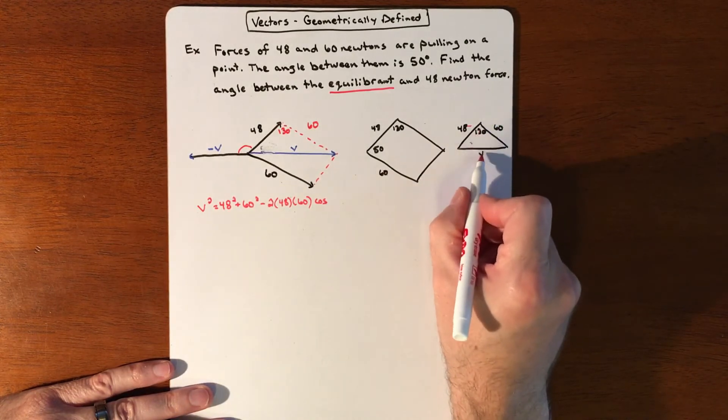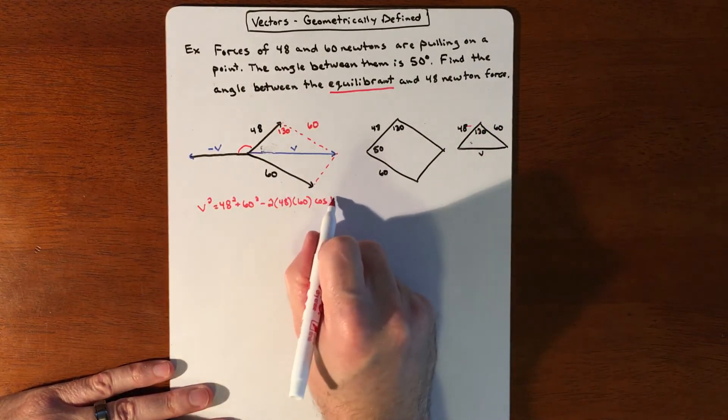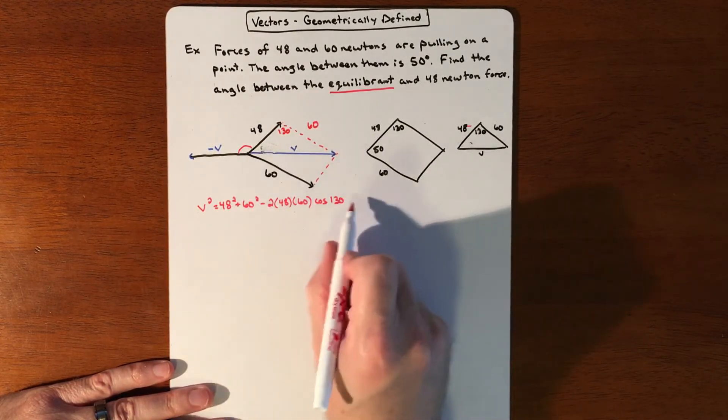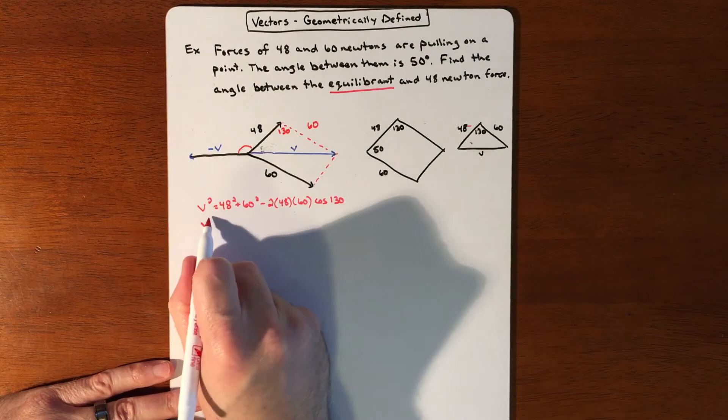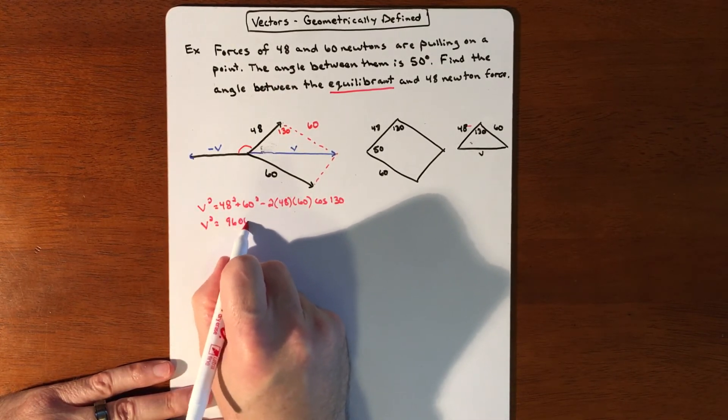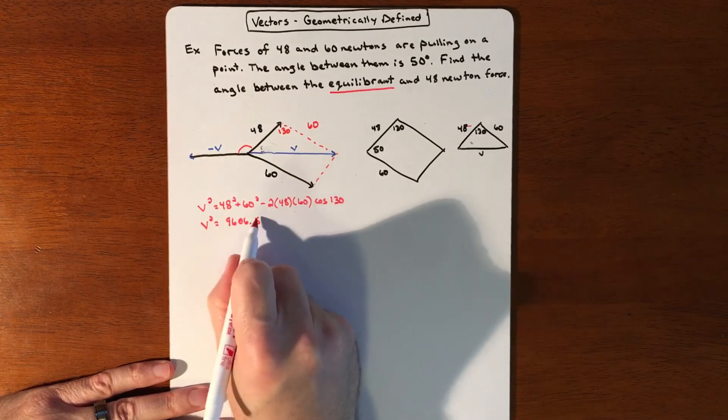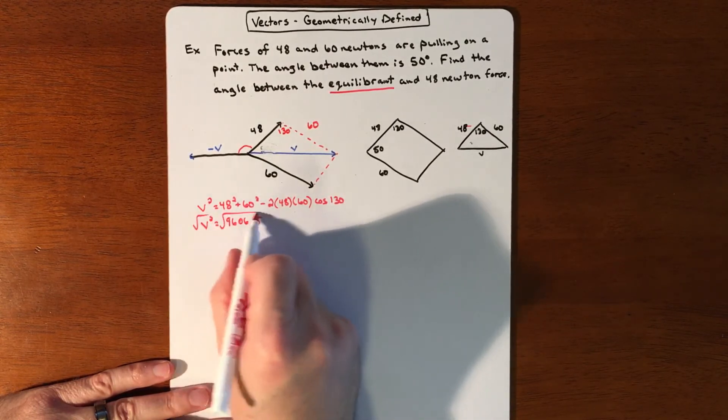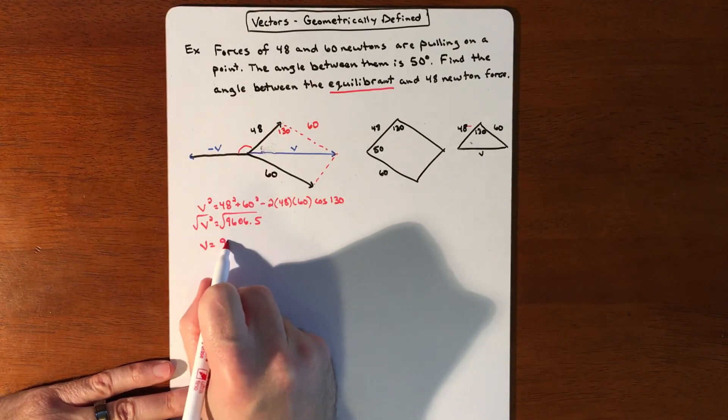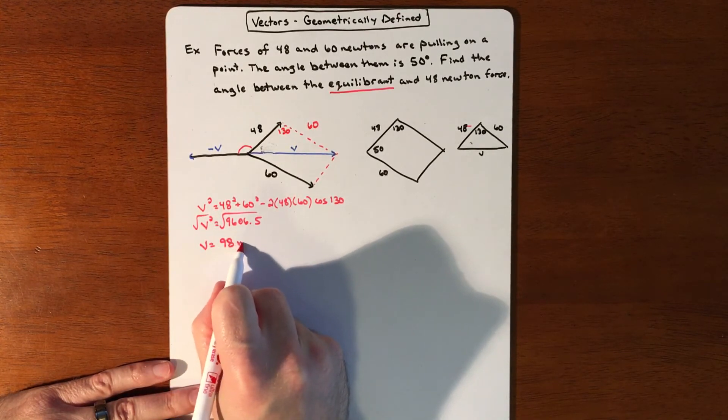Which is also this angle across from the side you're looking for, so sine of 130 or cosine of 130. So we're going to get roughly 9606.5 and probably a bunch of numbers after that. We'll square root that, and our resultant vector is about 98 Newtons.